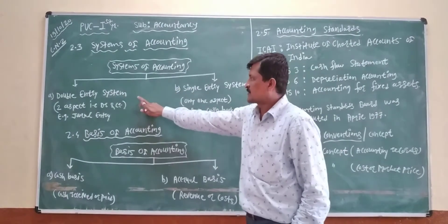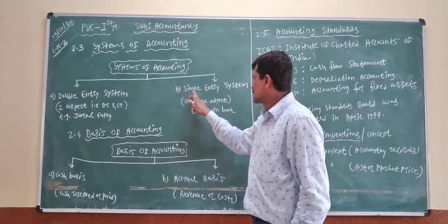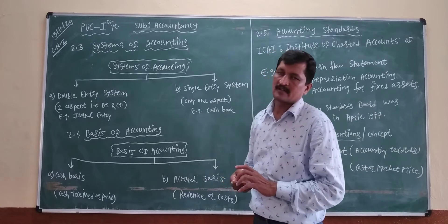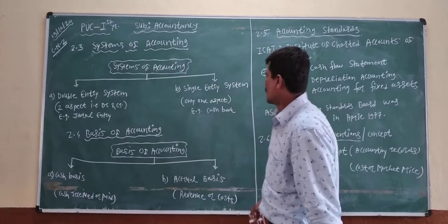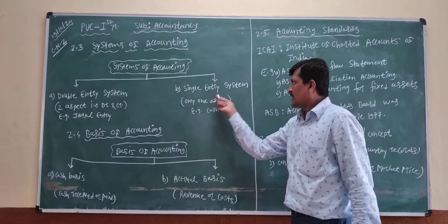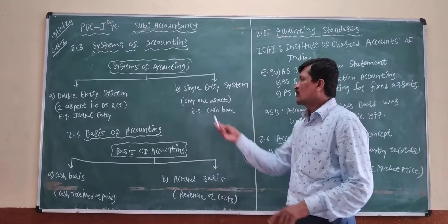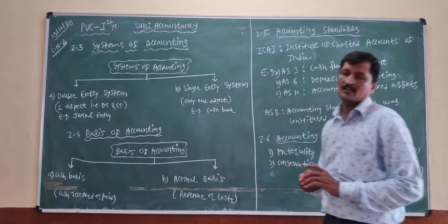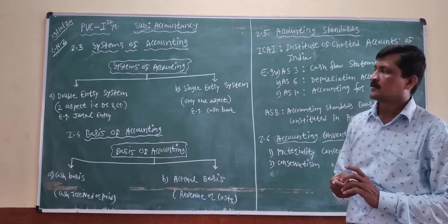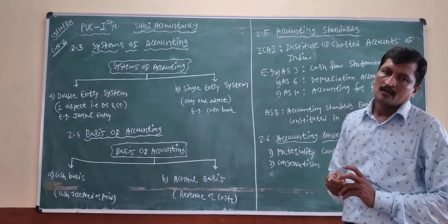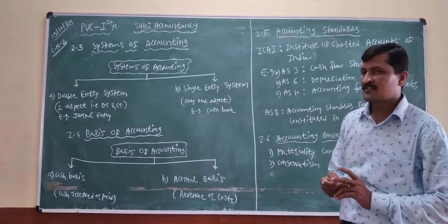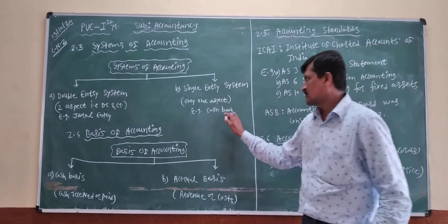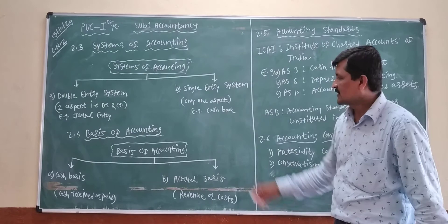Double entry system: transactions are recorded in two aspects — that is called a double entry system. Single entry system: transactions are recorded in only one aspect — that is called a single entry system. For example, cash flow — machinery account, only one aspect is recorded.